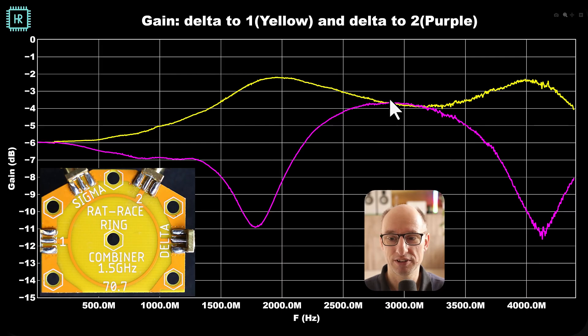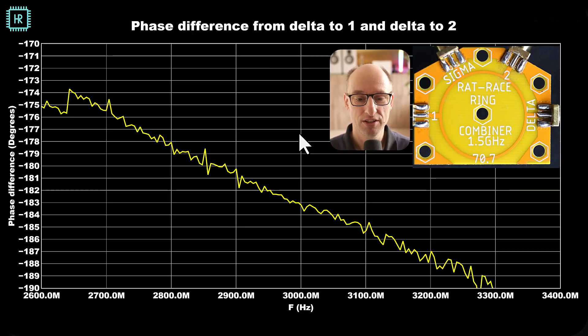Let's have a look at the delta mode. So we see something very similar at the delta mode, just the shape of the characteristics is a little bit different. We see slightly more loss, maybe 3.8 decibels, but the amplitudes are very equal. So what we're doing now: we're going into the delta port and we're looking at the signals at port 1 and 2 while the sigma port is loaded.